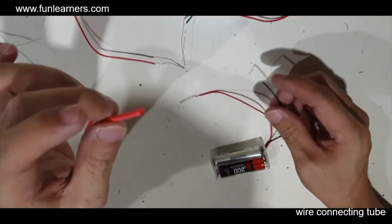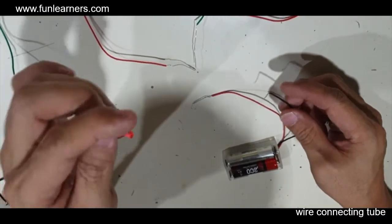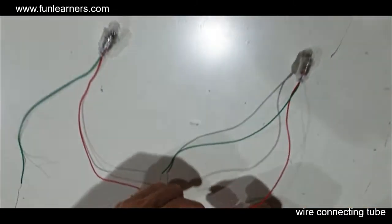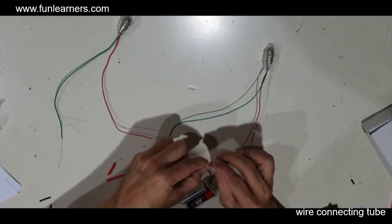This clip will show how to use this tube to replace crocodile clips. Here we have a battery, one wire connected to a light bulb. I'm going to connect the light bulb in series.